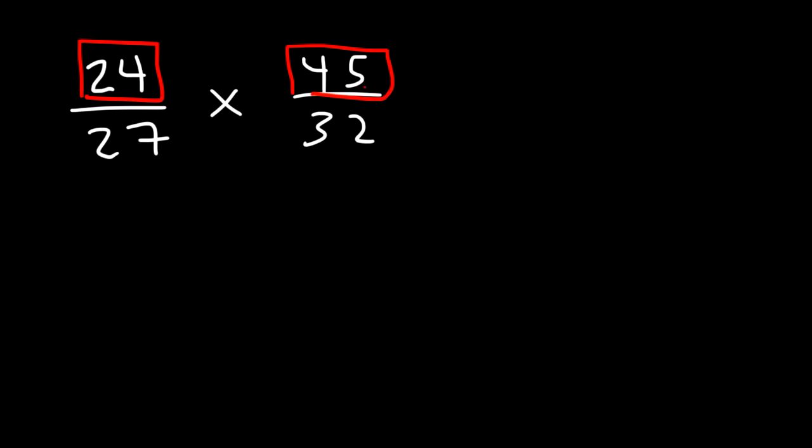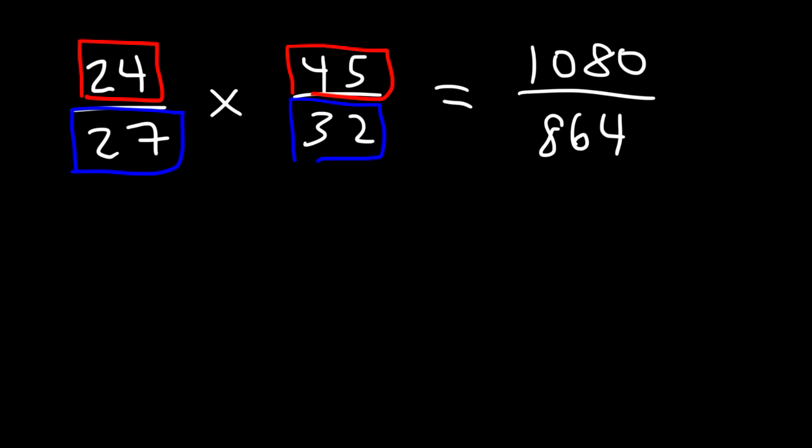Now let's talk about what to do when multiplying two fractions that contain large numbers. Now what I don't recommend is multiplying across. 24 times 45 is going to be a big number. If you multiply across that's going to give you 1080. And then if you multiply 27 by 32 that's going to be 864. So what are you going to do to reduce this fraction? That's not going to be fun and it's going to take a long time. So there has to be an easier way of getting the answer for this problem.